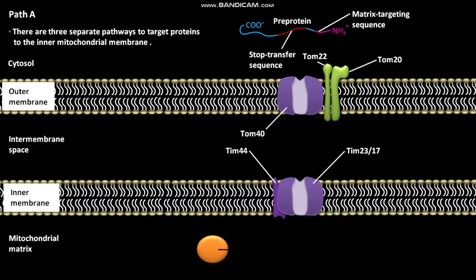In path A, the N-terminal targeting sequence of the pre-protein is recognized by TOM20 and TOM22 import receptor. The pre-protein is then transferred through the TOM40 general import pore to the intermembrane space. From the intermembrane space, the pre-protein is translocated through TM23 and TM17 translocation complex to the mitochondrial matrix. The hydrophobic stop-transfer sequence present in the pre-protein blocks the translocation of the C-terminus across the inner membrane.